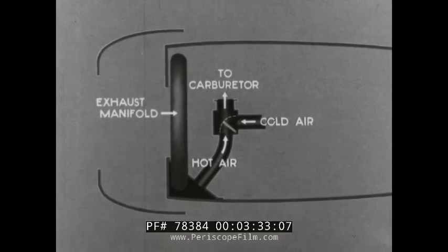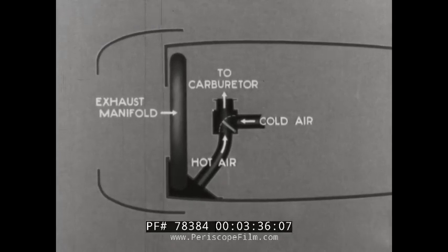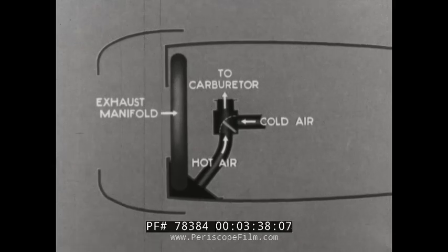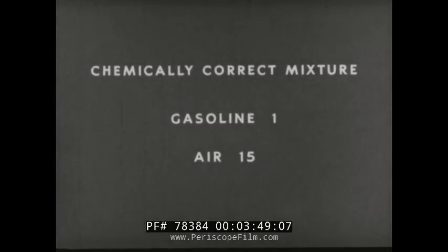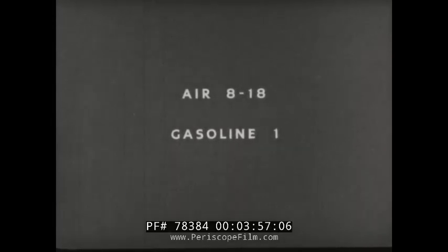Control of the heat supplied is very desirable. The chemically correct mixture for combustion of gasoline is 15 pounds of air to 1 pound of gasoline. It will burn within limits of 8 to 18 pounds of air to 1 of gasoline, but the rate of burning decreases as we approach the upper and lower limits, especially on the lean side.